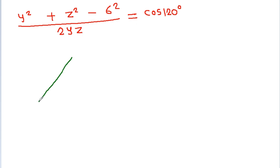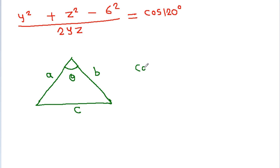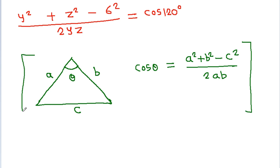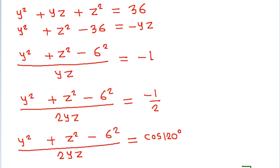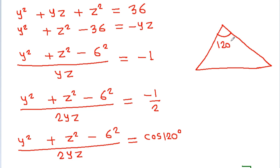In any triangle, if the sides are a, b, c and the included angle is θ, then cos θ = (a² + b² − c²) / (2ab). So from the second equation, (y² + g² − 6²) / (2yg) = cos 120°, meaning we have a triangle with sides y, g and opposite side 6, with included angle 120°.